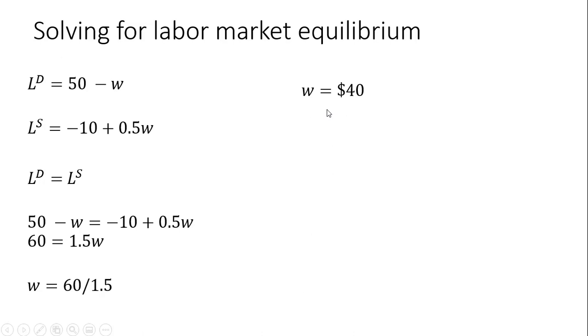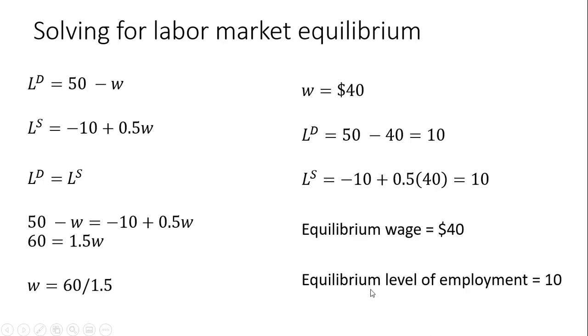To get the equilibrium level of employment, plug $40 back into either the demand or supply equation. So at a wage of $40, firms will want to hire 10 workers. 50 minus 40 is 10. And at $40, the number of people willing to work is going to be 10. Just looking at the labor supply equation and plugging 40 into it, we get -10 + 20. So equilibrium wage of 40, equilibrium level of employment equals 10.